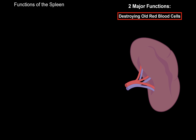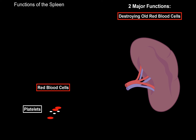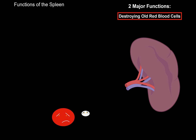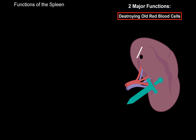The first function of the spleen is to destroy old red blood cells — the spleen is usually referred to as the graveyard of red blood cells. When blood moves in through the splenic artery, it brings red blood cells and platelets. If those red blood cells or platelets are damaged and not serving their function, the spleen detects and destroys them. So it monitors the blood, not lymph, because it has its own blood supply.